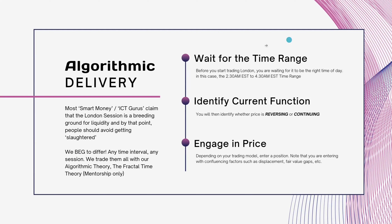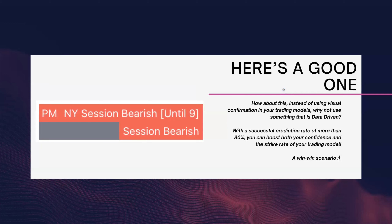Before you start trading London, you have to wait for the right time of day — 2:30 AM EST to 4:30 AM EST. Inside that range, you identify the current function: is price reversing or continuing? Then you engage in price using whatever trading model you have, such as displacement fair value gaps. If you use my bias predictor, things can get really easy — it's data-driven and can boost your confidence and strike rate 70-80%, sometimes even 100% of the time.